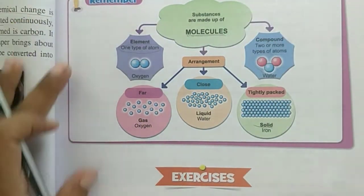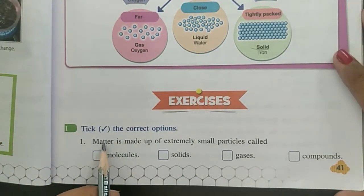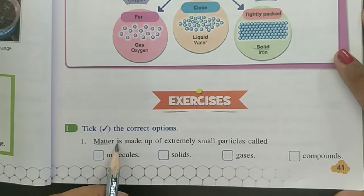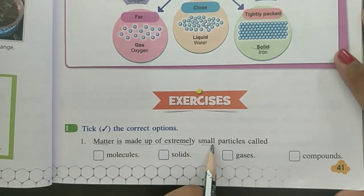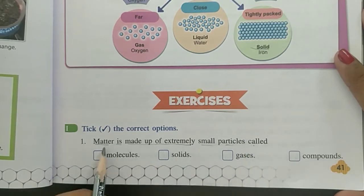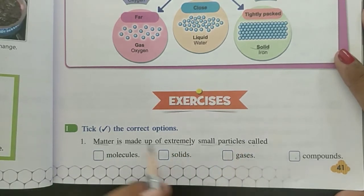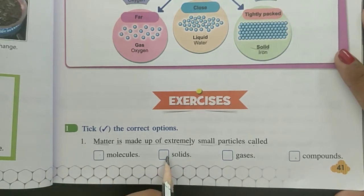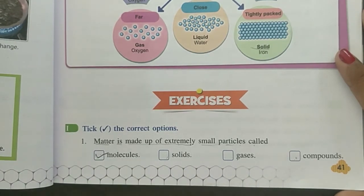Now we are going to solve exercise. Pick the correct option. First is, Matter is made up of extremely small particles called molecules, solid, gases, compound. Solid and gases are states. So the answer is molecules.